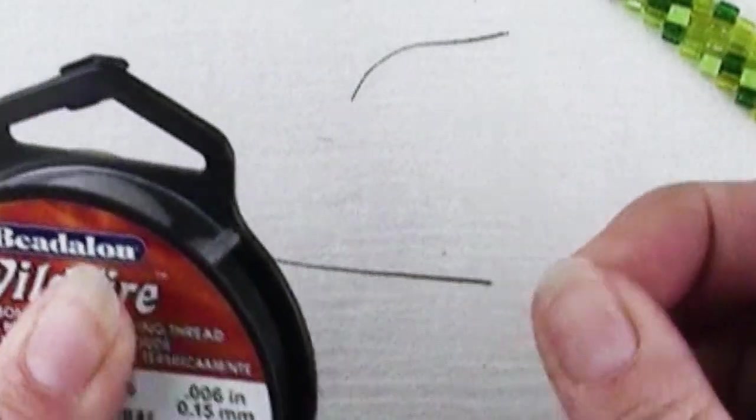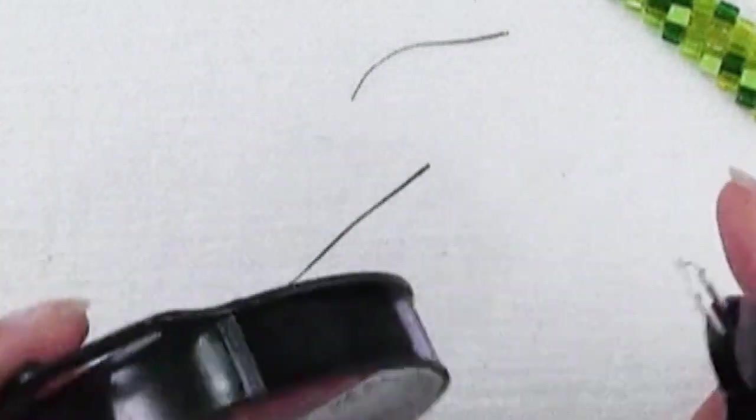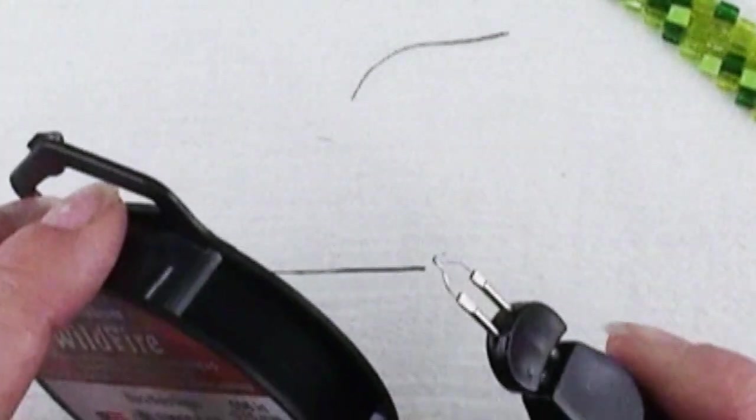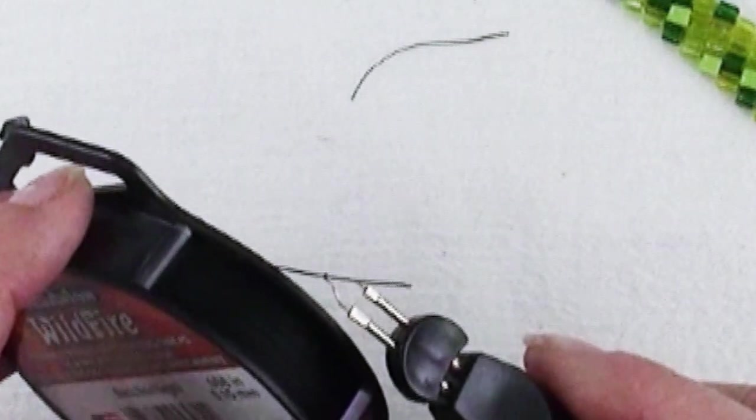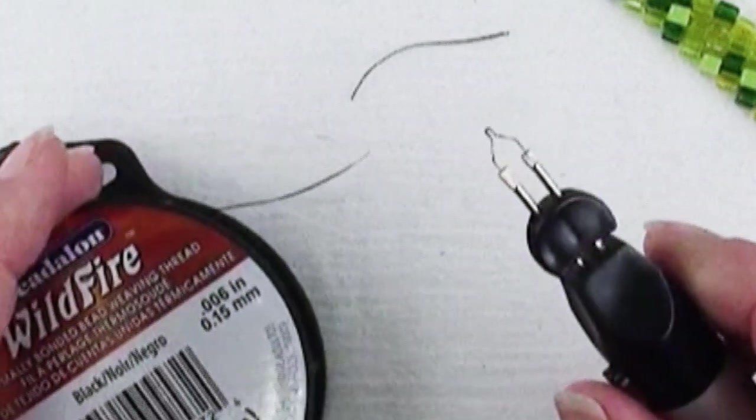It flattens the thread and pulls off that little blob and then you can thread your needle. So you can do it that way. Again, I'm not quite sure if you know the benefit of doing it like this, of putting it in there rather than just pressing it on. I'd be interested in knowing.